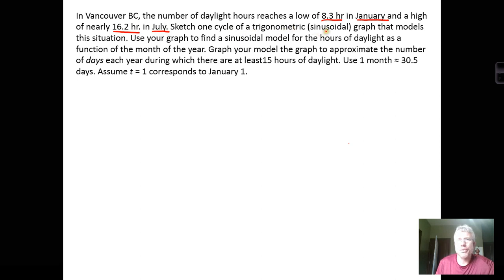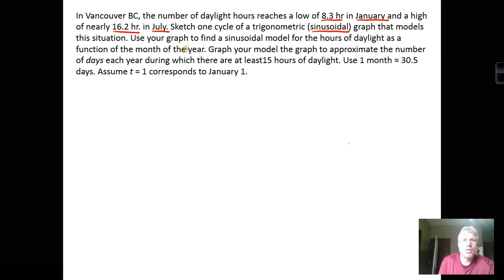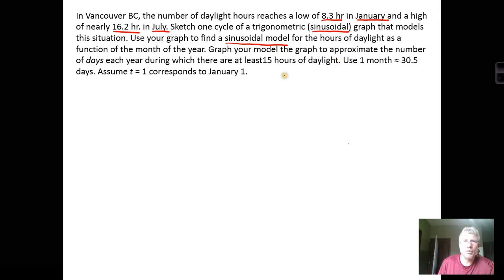We need to sketch one cycle of a sinusoidal graph that models this situation. When functions look like sine or cosine functions, we call them sinusoidal models — they are cyclic models. Then we'll use the graph to find a sinusoidal equation for hours of daylight as a function of month, graph it with a graphing calculator, and approximate the number of days when there are at least 15 hours of daylight. One month is about 30.5 days, and t = 1 corresponds to January first.